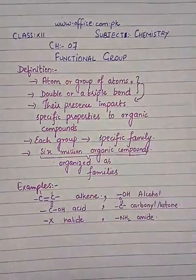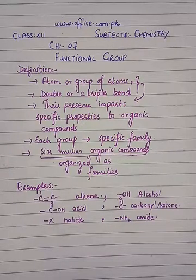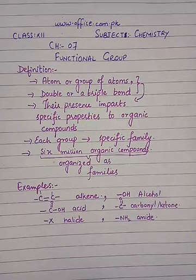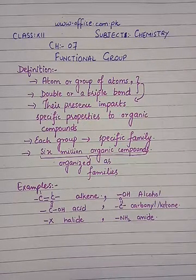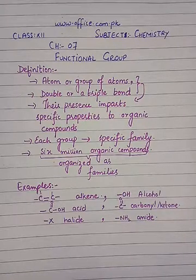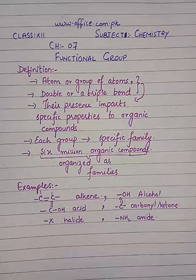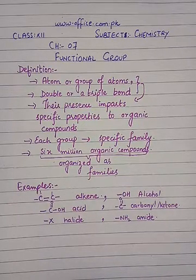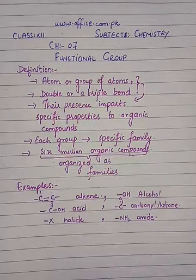For example, we have alcohols — when we study the properties of alcohols, all alcohols are going to have the same properties. There are six million organic compounds and you cannot study them one by one. So we organize them as families, grouping them according to the functional group or the specific type of group of atoms that imparts specific properties, so that we can study them easily.